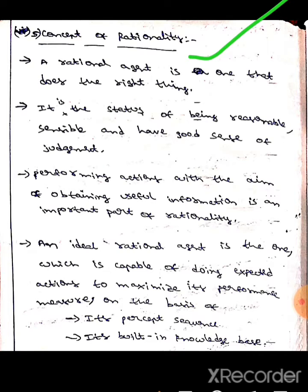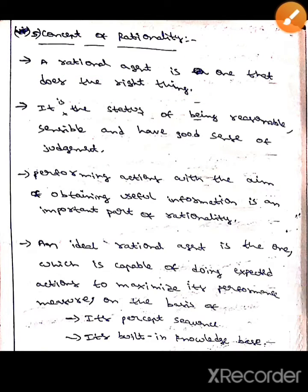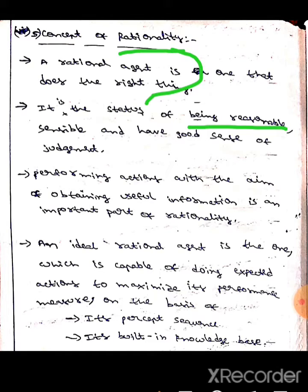A rational agent is the type of agent which does the right thing. Here, rationality means it is a status of being reasonable, sensible and having a good sense of judgment.